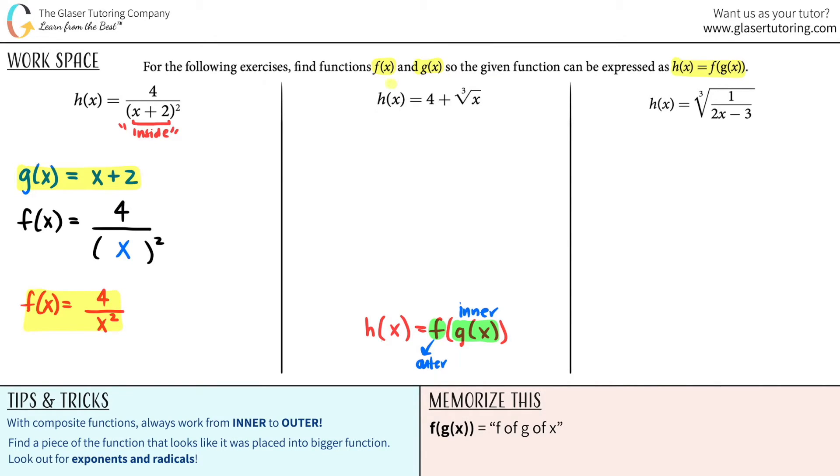Okay, so now moving on to the second one, h of x equals 4 plus the cubed root of x. Hmm, I don't really see anything really trapped or inside of parentheses. So that's not really going to help us. However, I see two distinct entities. I have a 4 plus something else that has a variable in it, right? An x.